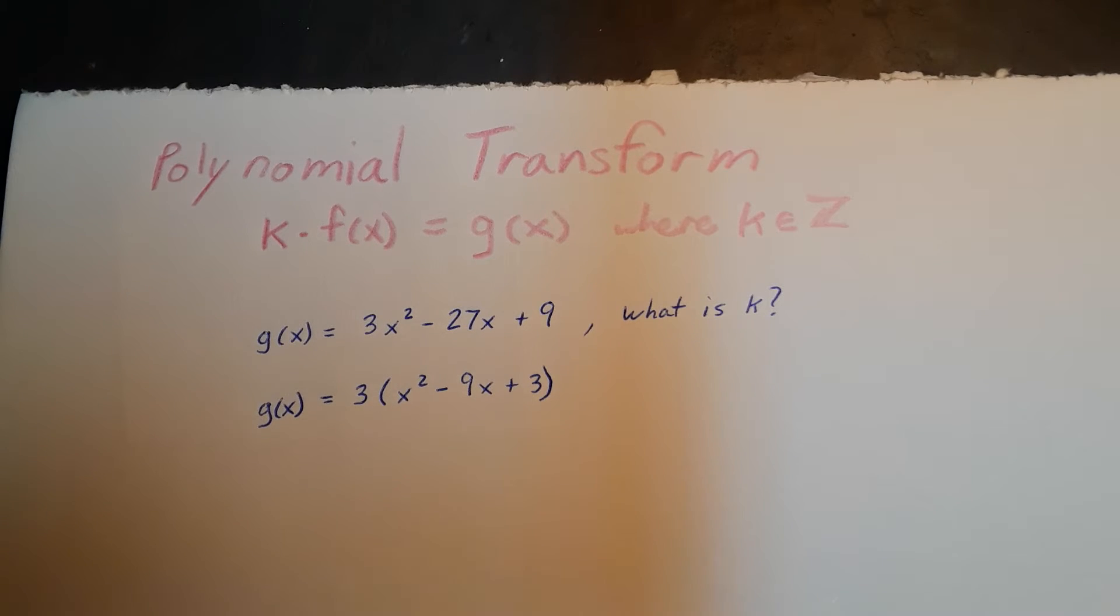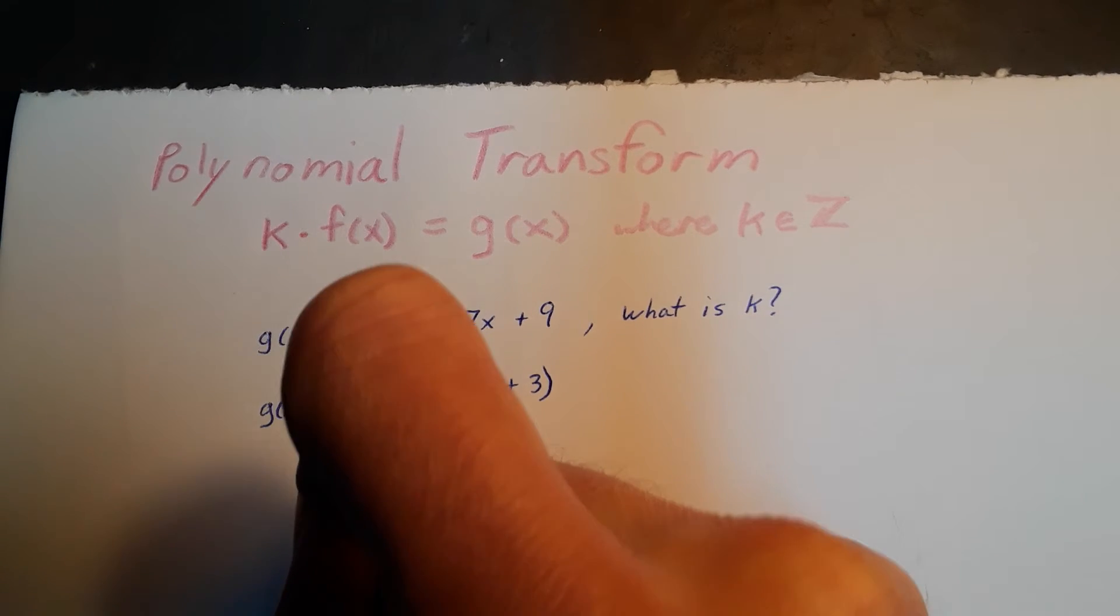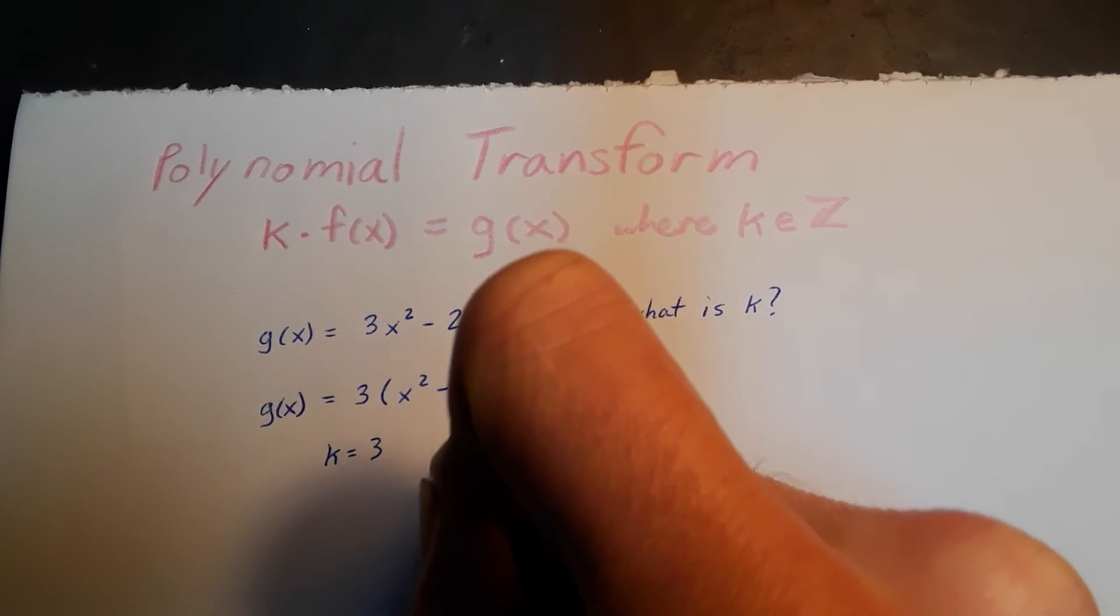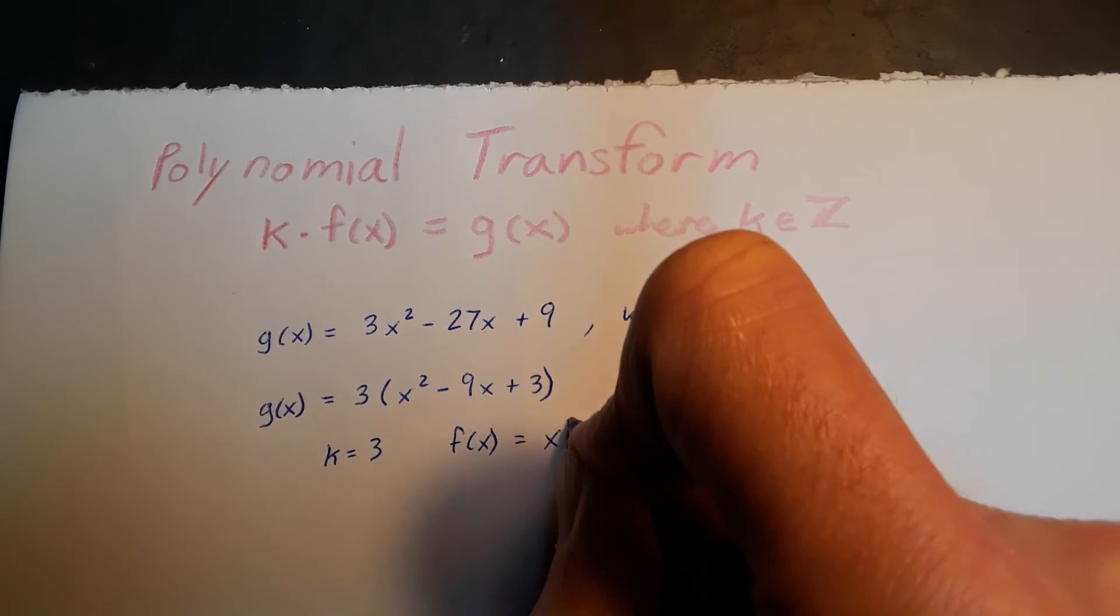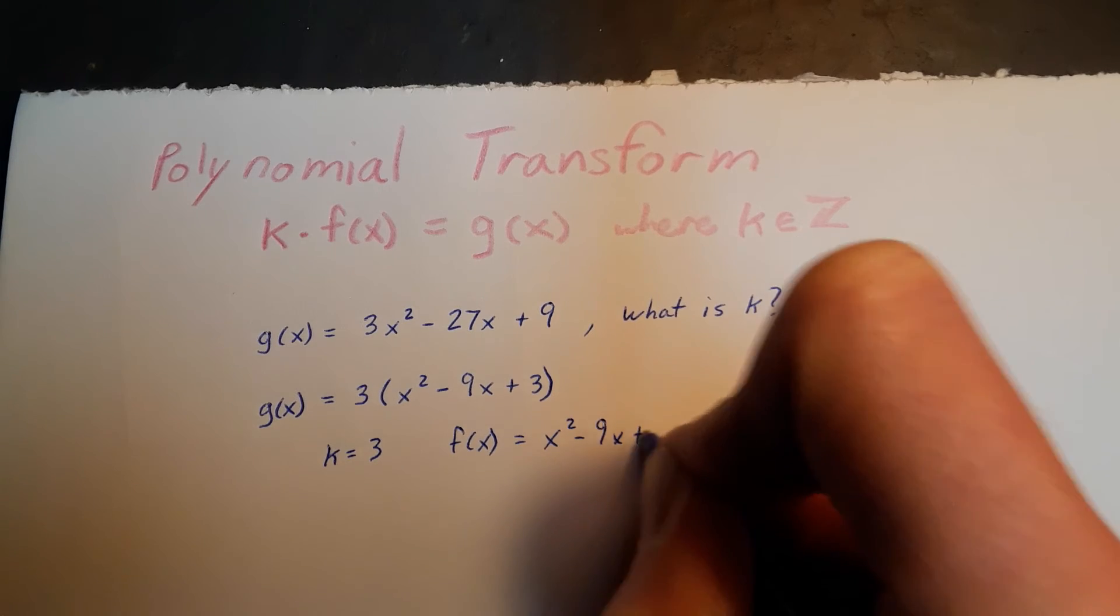So we have solved this. K equals 3, and f of x equals x squared minus 9x plus 3.